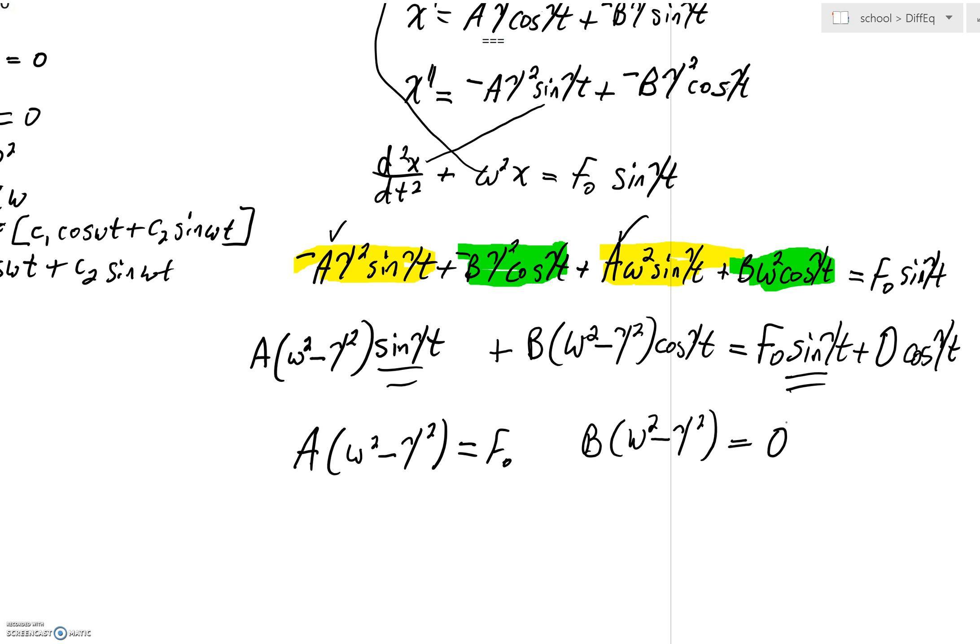Now, by the way, we're assuming right now that we have an underdamped system, which is going to be most typical. That would mean that ω² - γ²,